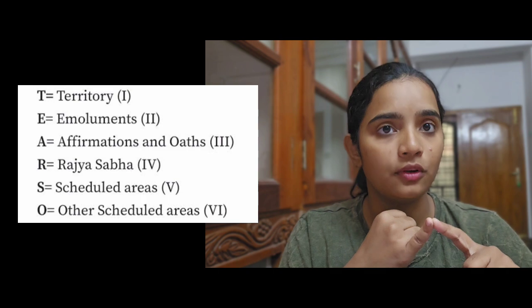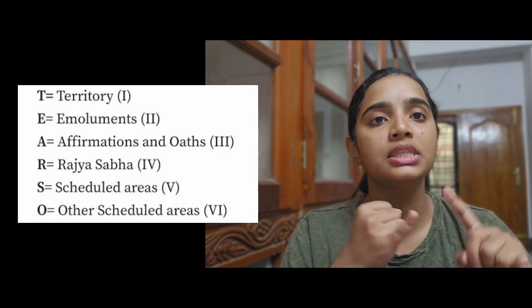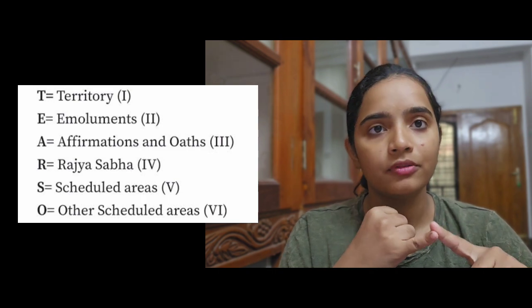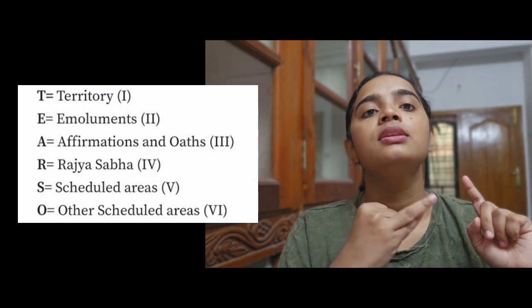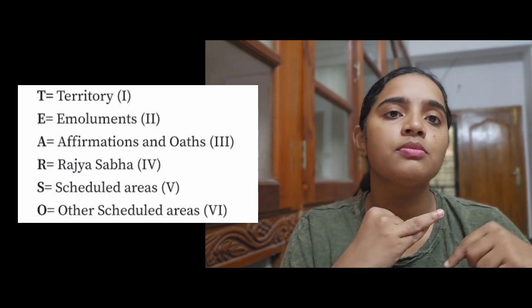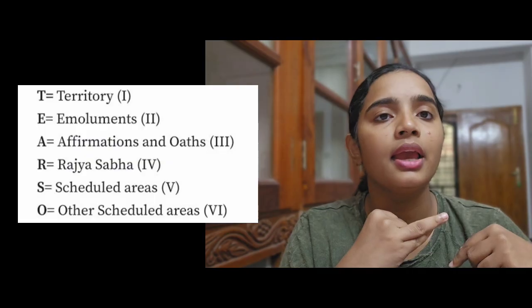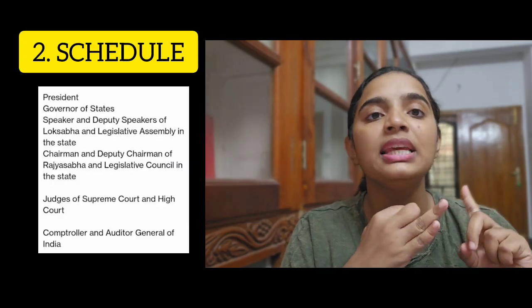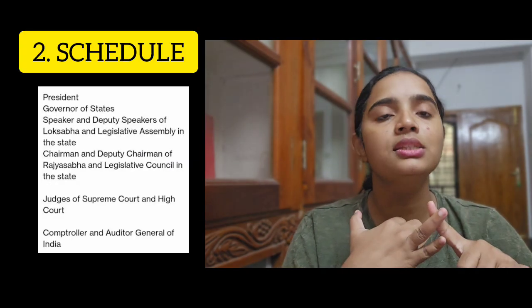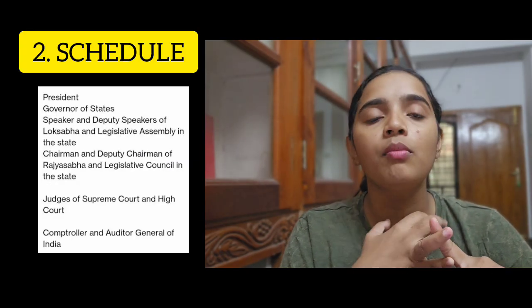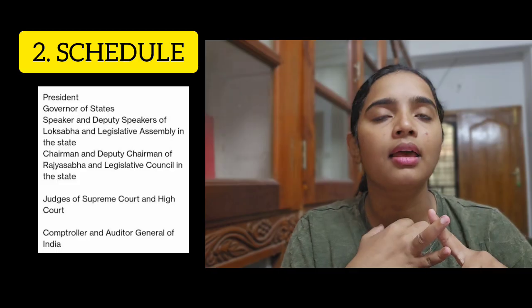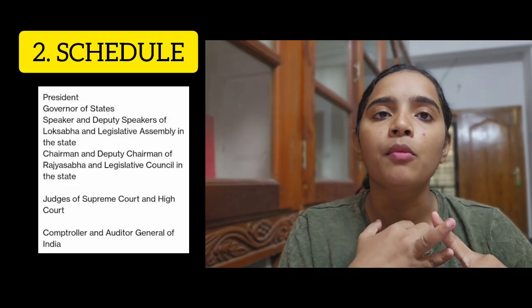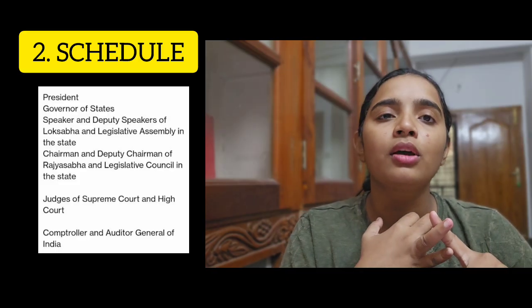Now the first schedule. T means Territory — T-E-A-R-S. E stands for Emoluments. Emoluments, Elements, Privileges. That means emoluments or elements.